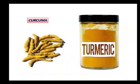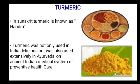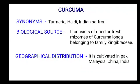Now the fourth drug: curcuma — by using curcuma, we prepare turmeric powder. Turmeric — in Sanskrit, turmeric is known as Haridra. Turmeric was not only used in India but was also used extensively in Ayurveda, the ancient Indian medical system of preventive health care. Synonym: turmeric, haldi, Indian saffron. Biological source: it consists of dried or fresh rhizomes of Curcuma longa belonging to family Zingiberaceae.